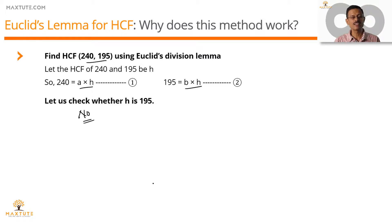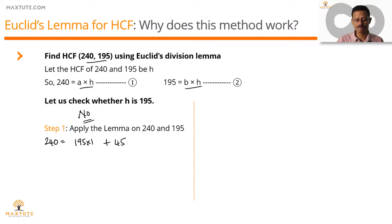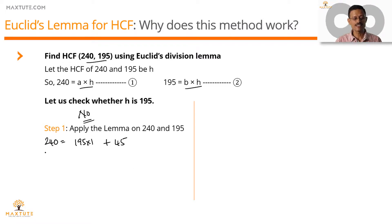Having answered this, we're going to apply the division lemma and rewrite it to see what is actually happening in the process. We would have applied this division lemma on 240 and 195. So the first step would be: 240 = 195 × 1 + 45. A remainder exists, so we go ahead and recursively continue this process. But let's understand this step properly and find out what is actually happening.